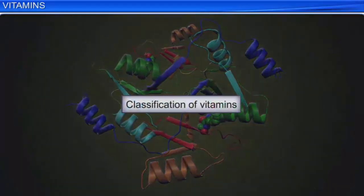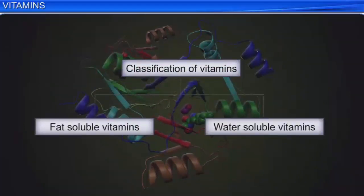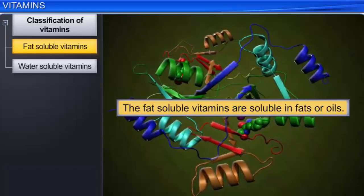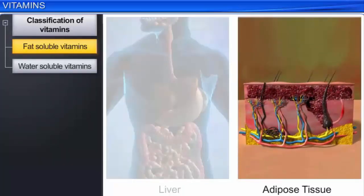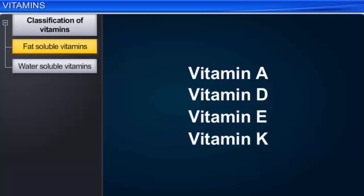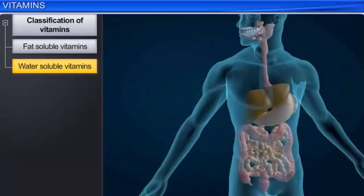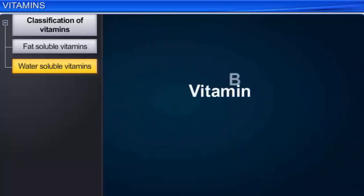Vitamins are typically classified into two groups based on their solubility: fat-soluble vitamins and water-soluble vitamins. Fat-soluble vitamins are soluble in fats or oils and are stored in the liver and adipose fat-storing tissues. Vitamins A, D, E, and K are fat-soluble vitamins. Water-soluble vitamins are soluble in water; they are readily excreted and therefore cannot be stored or accumulated in the body. They must be a regular part of your diet. B group vitamins and vitamin C are water-soluble vitamins.